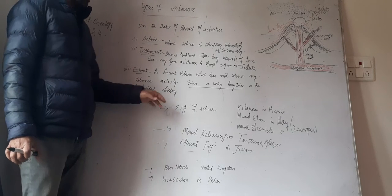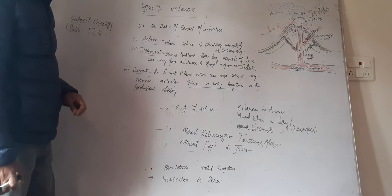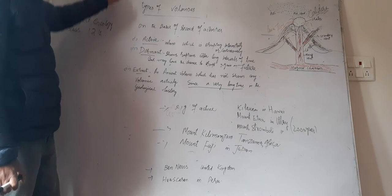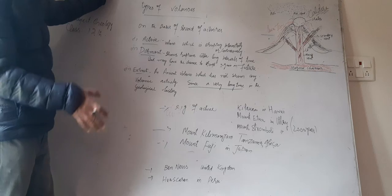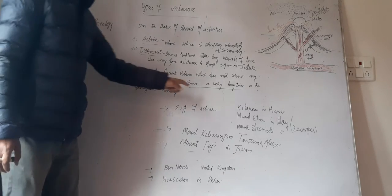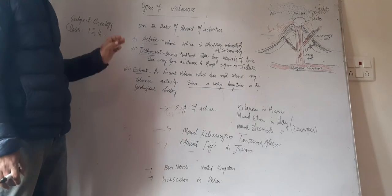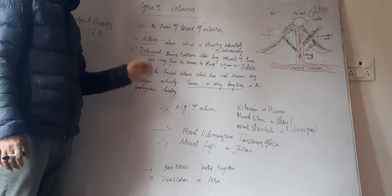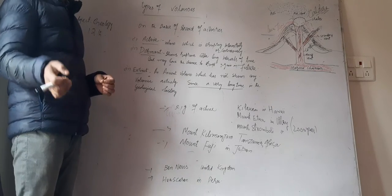So there are examples of active volcanoes. Active volcano which is in Hawaii is Kilauea, or Mount Etna which is in Italy, and Stromboli which is also in Italy. These volcanoes show volcanic activity, or we can say they are continuously erupting from the last two thousand years.